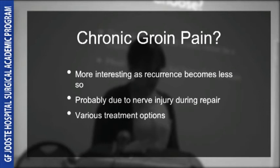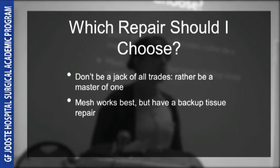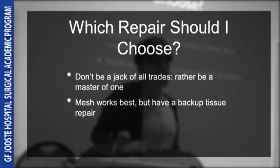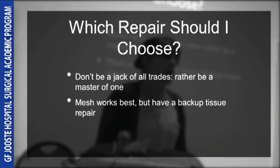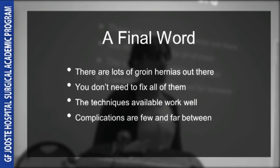Which repair should you choose? You should familiarise yourself with multiple repairs, but try to be a master of one. The chosen repair should be relevant to your setting — for example, it is no use becoming a master of the Prolene hernia system at a resource-limited institution. If your chosen repair is an anterior repair, it is useful to have a backup extraperitoneal repair for treating recurrences, and vice versa. You should always have a tissue repair in your repertoire for cases where it is unsafe to insert mesh, such as when bowel resection has been required. In summary: there are lots of groin hernias out there — they don't all need to be fixed. The techniques available work well, there are many of them, and complications are few and far between.